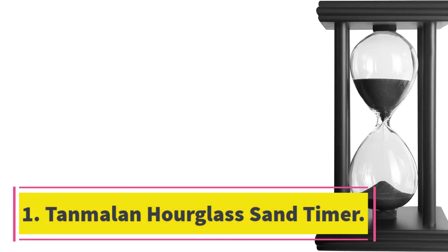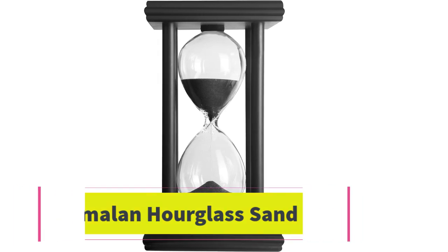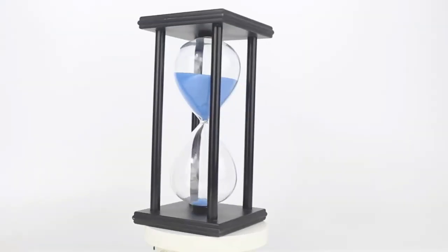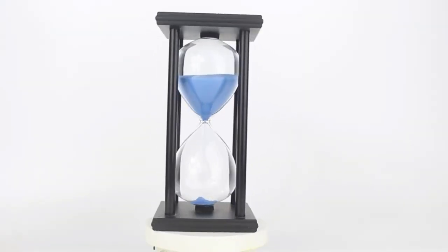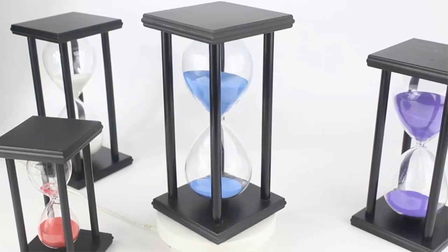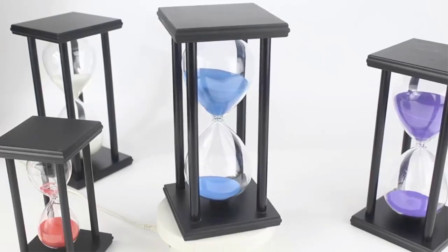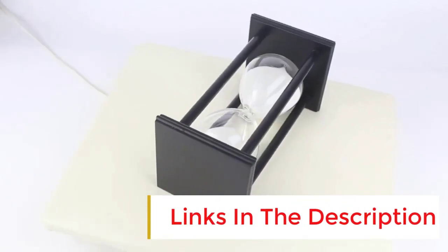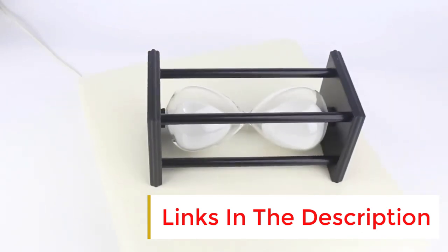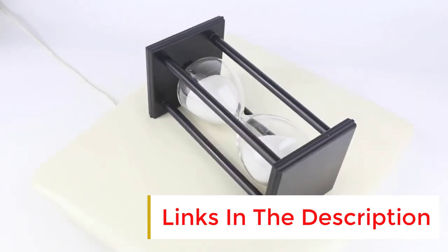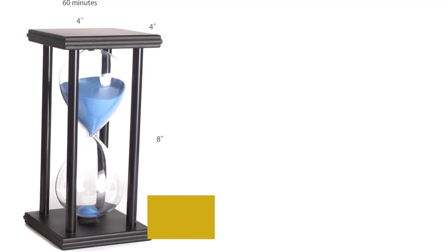The Tanmarlin sand timer is a medium-sized hourglass that is just right for your table, with dimensions of 3.2 by 3.2 by 5.5 inches. It is compact and convenient to use. The timer has a timing duration of 60 minutes, plus or minus 6 minutes, which is perfect for various activities such as cooking, studying, or even taking a power nap.